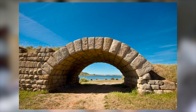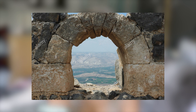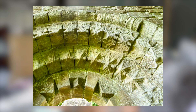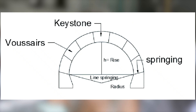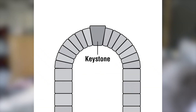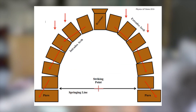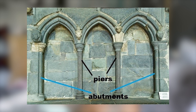Components of an arch: the wedge-shaped blocks used to create arches are called voussoirs. They must be correctly cut so each presses firmly with the adjacent blocks and the load is properly conducted. The top central voussoir is called a keystone — it is always at the crown of the arch. The support of an arch is known as a pier, and the end of an arch is called an abutment.